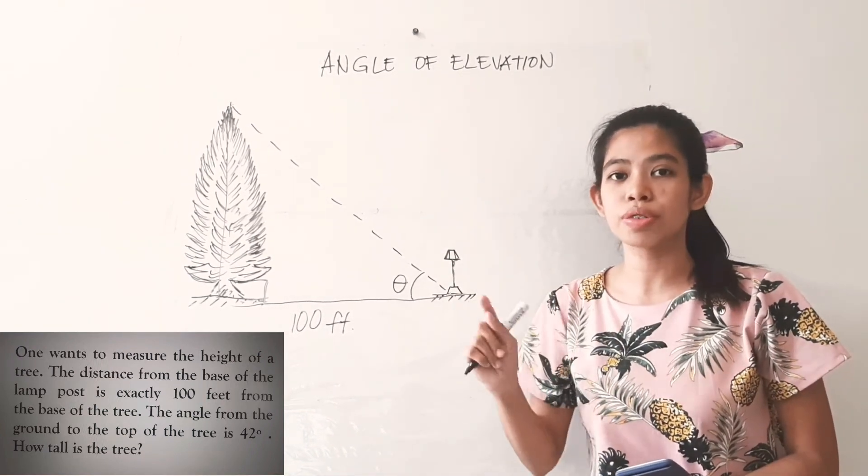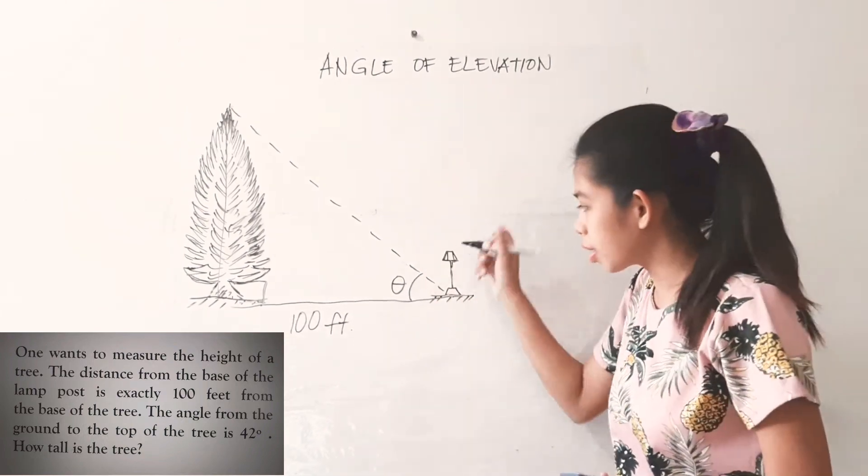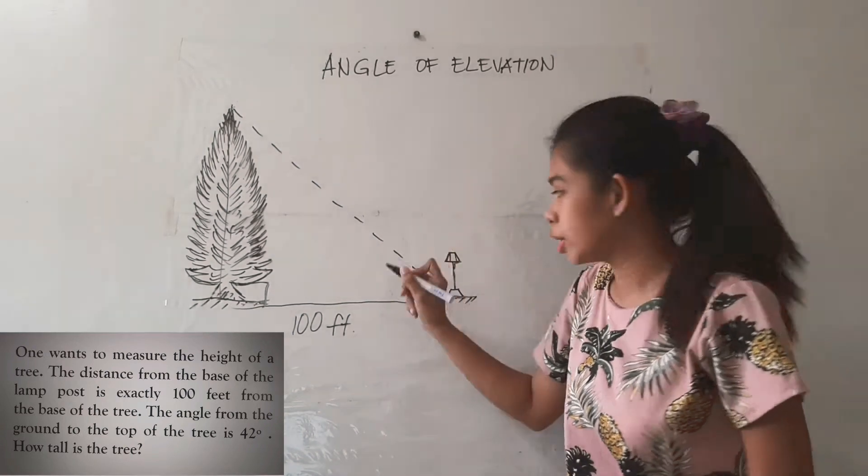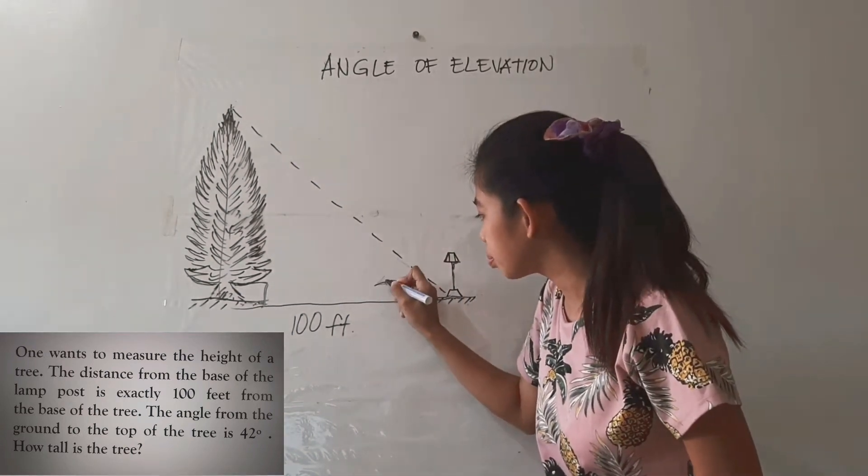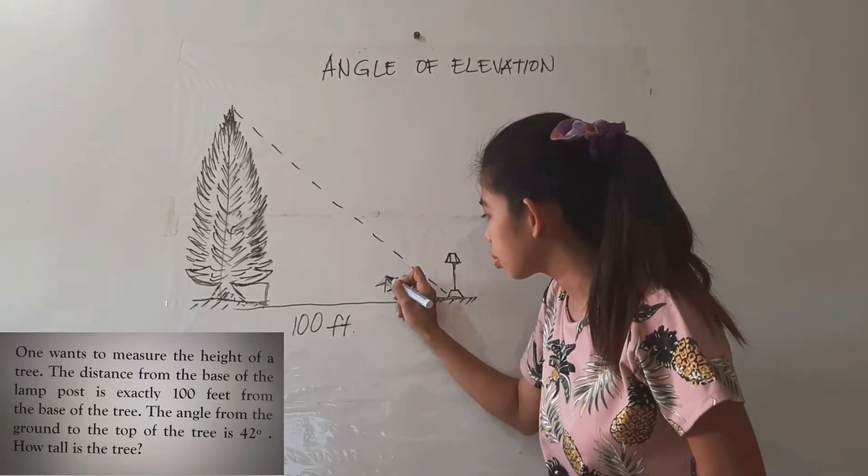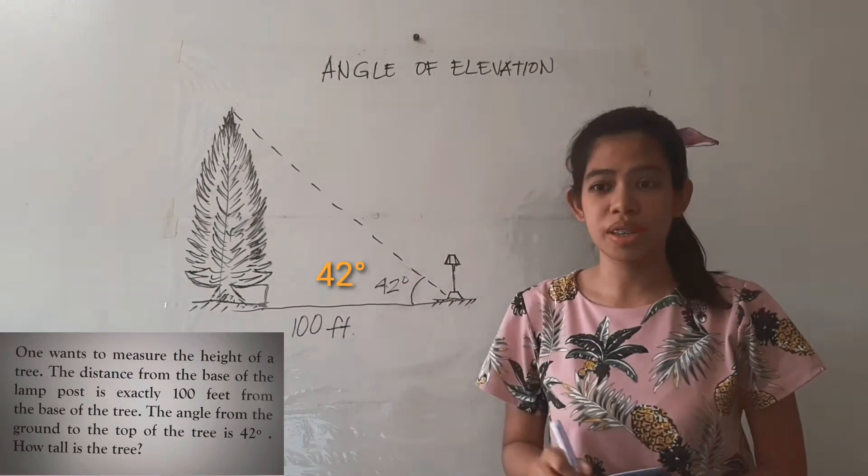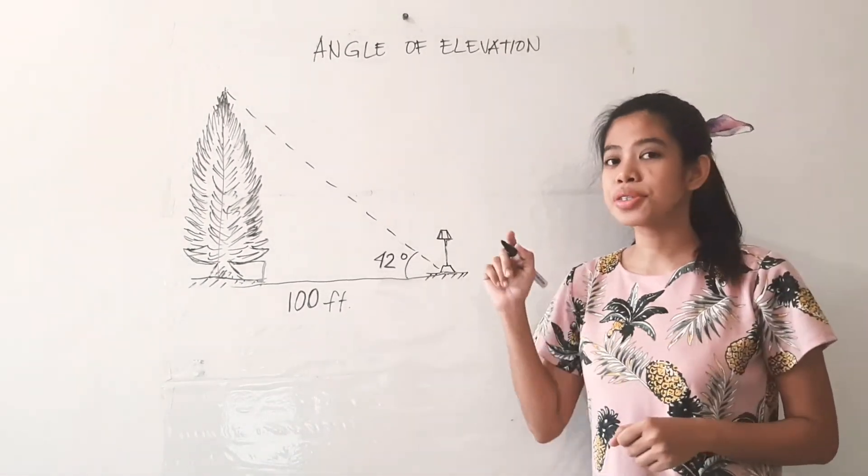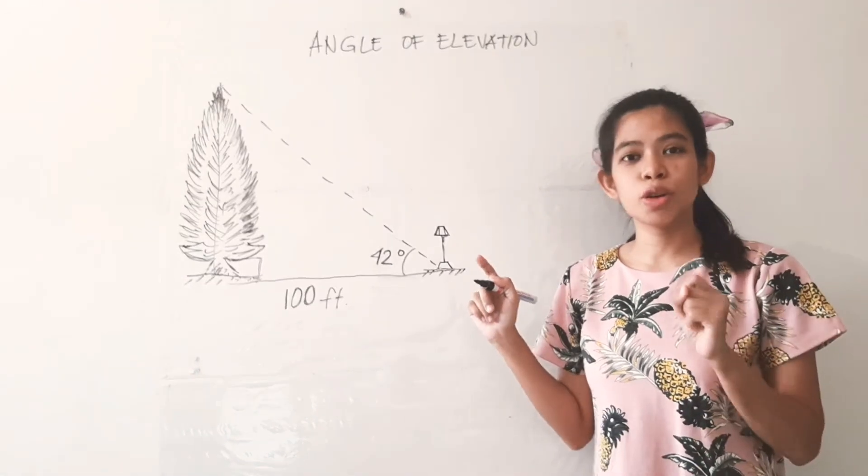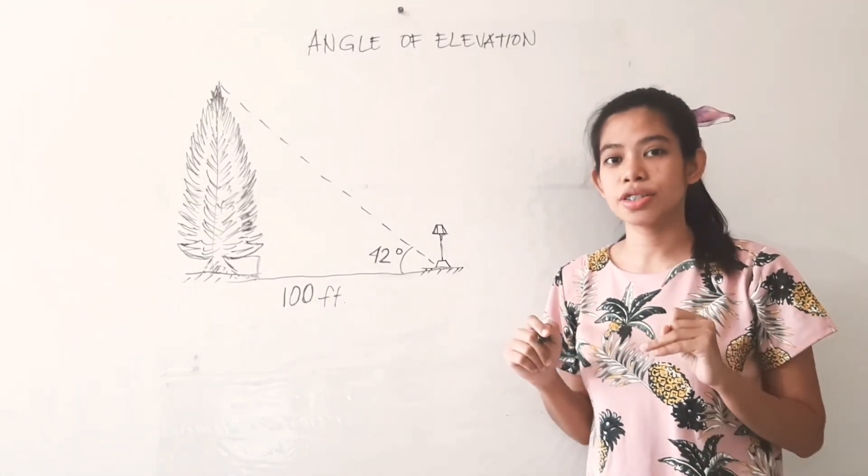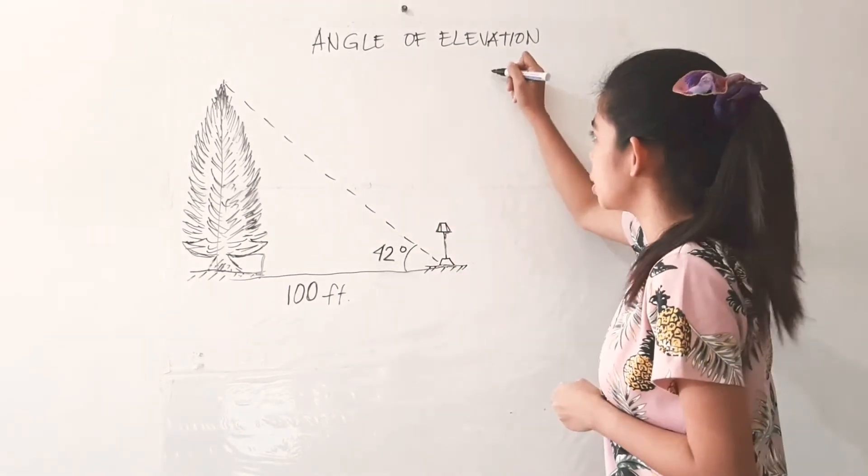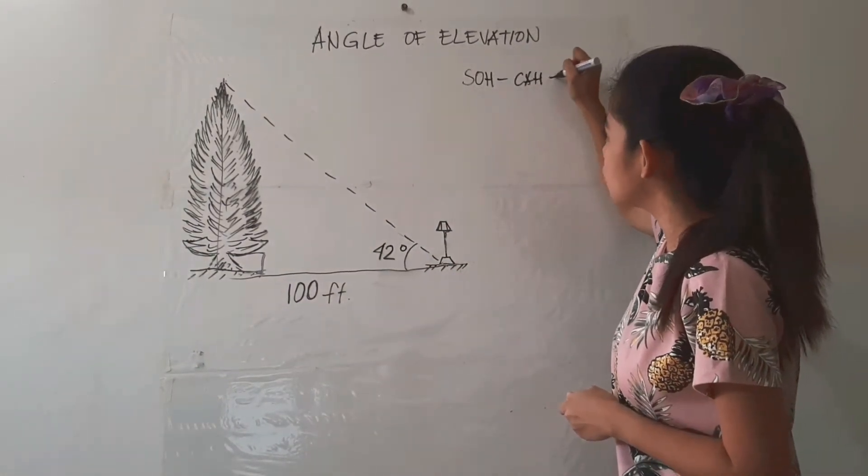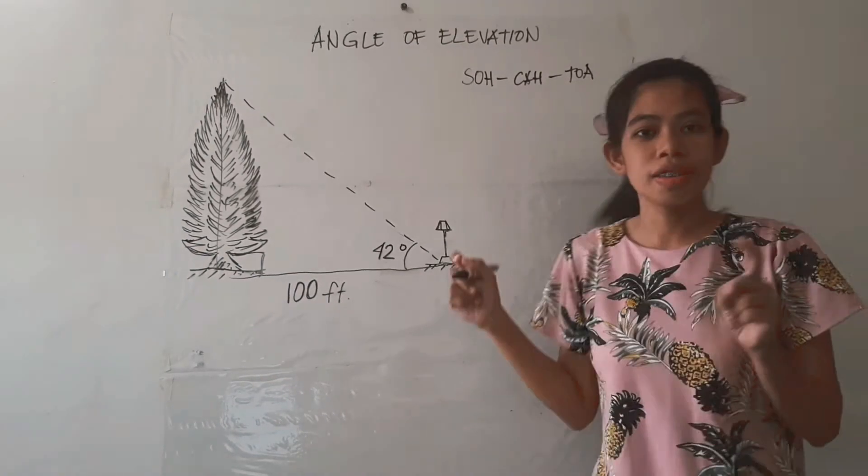Again, the angle of elevation is always from the ground up. So we can locate here the angle of elevation which measures 42 degrees. Now the problem is, how tall is a tree? So for us to solve this, we are still going to use the six trigonometric ratios, or one of those six trigonometric ratios. So we are going to choose later on between SOH-CAH-TOA once again.